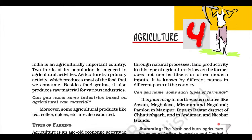Tea cultivation is an example of plantation agriculture. It is also an important beverage crop, introduced in India initially by the British. Today, most of the tea plantations are owned by Indians. The tea plant grows well in tropical and subtropical climates endowed with deep and fertile well-drained soil rich in humus and organic matter. Tea bushes require a warm and moist, frost-free climate all through the year. Frequent showers evenly distributed over the year ensure continuous growth of tender leaves. Tea is a labour-intensive industry. It requires abundant, cheap, and skilled labour. Tea is processed within the tea garden to restore its freshness. Major tea-producing states are Assam, hills of Darjeeling and Jalpaiguri districts of West Bengal, Tamil Nadu, and Kerala. Apart from these, Himachal Pradesh, Uttarakhand, Meghalaya, Andhra Pradesh, and Tripura are also tea-producing states in the country. In 2008, India was the third largest producer of tea after China and Turkey.